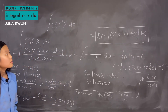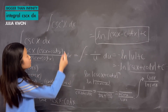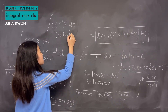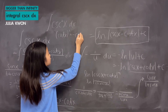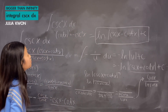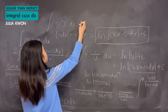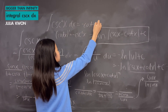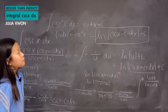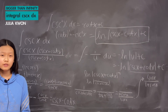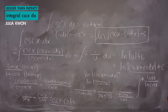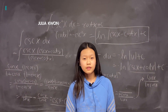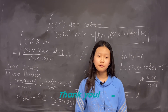For the integral of cosecant squared x dx: recall that the derivative of cotangent x equals negative cosecant squared x. Since we don't have a negative here, the integral of positive cosecant squared x dx equals negative cotangent x plus C. So negative cotangent x plus C is the answer. In this video I solved for the integral of cosecant x and cosecant squared x, and in the next video I'll be solving for the integral of cosecant cubed x.